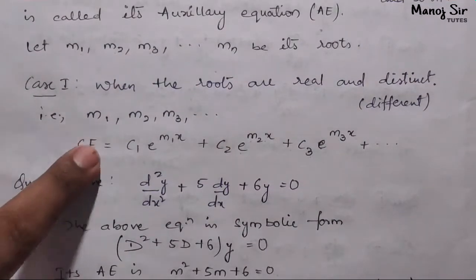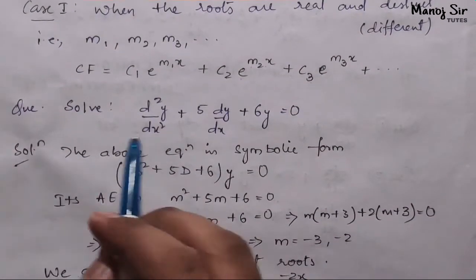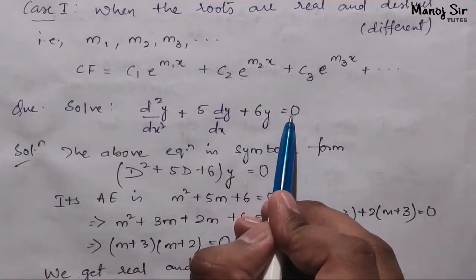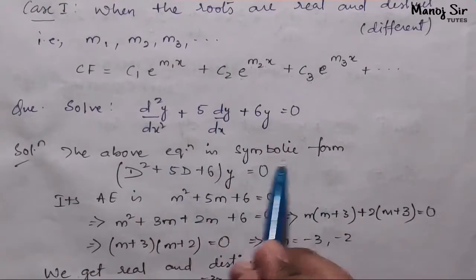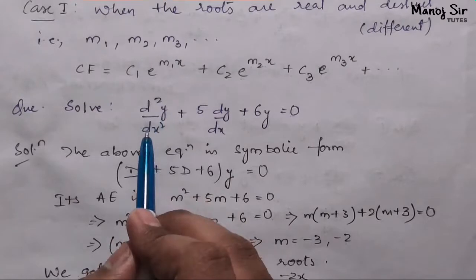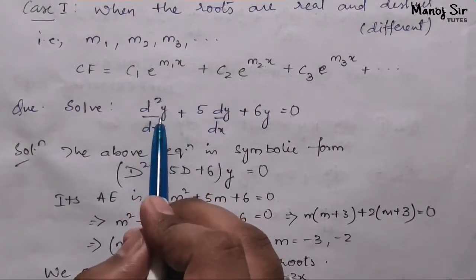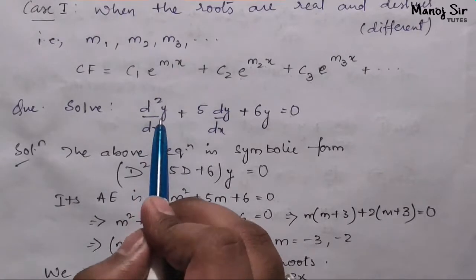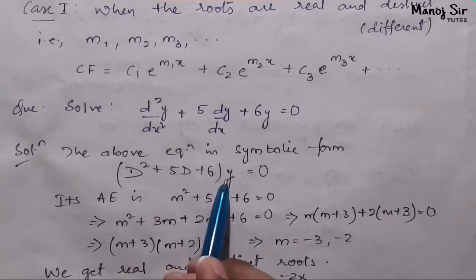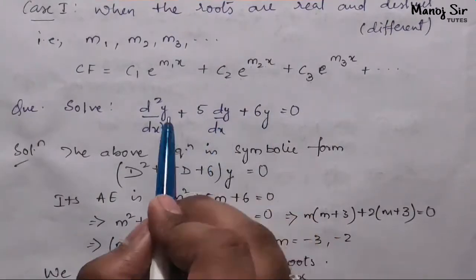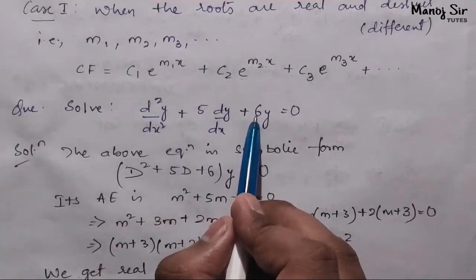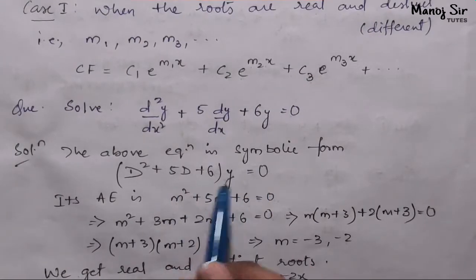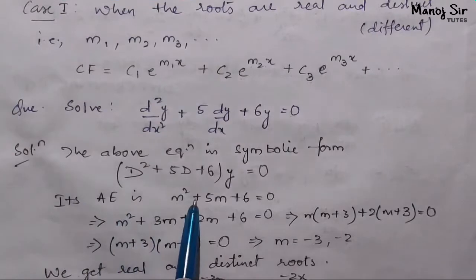Solve: d²y/dx² + 5·dy/dx + 6y = 0. The above equation in symbolic form — since d²/dx² is D² — this is a second-order differential equation. Since y is common in all three terms, we take y as common and rewrite in symbolic form as: (D² + 5D + 6)·y = 0.